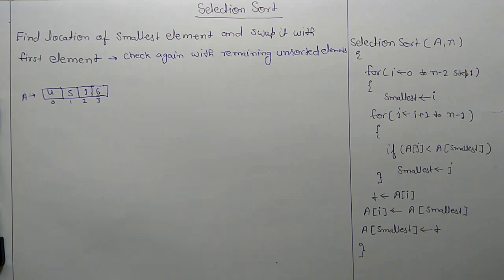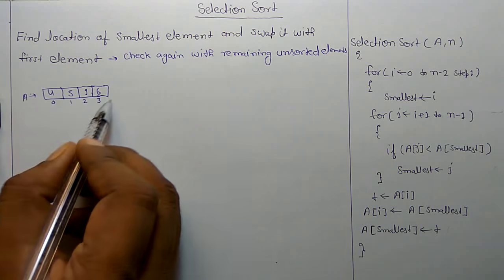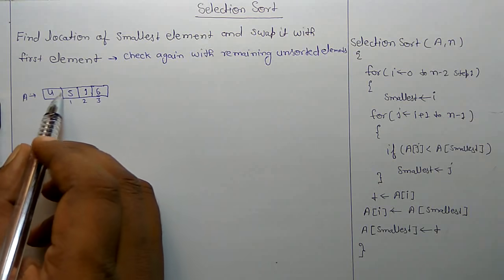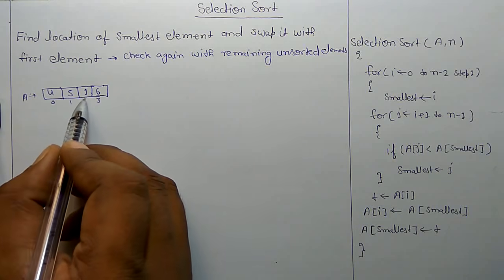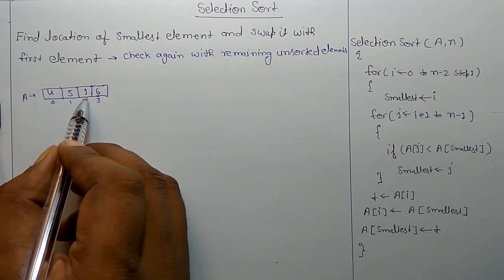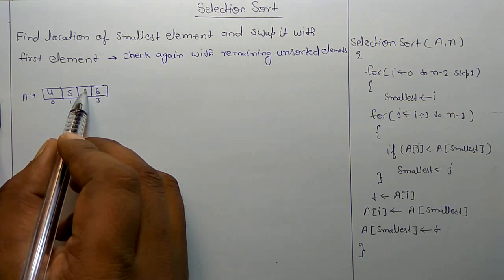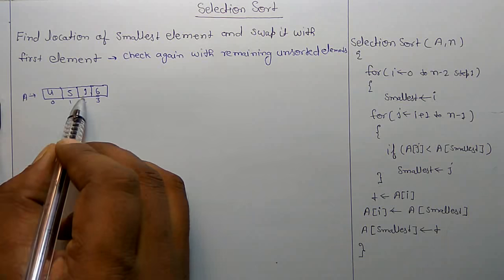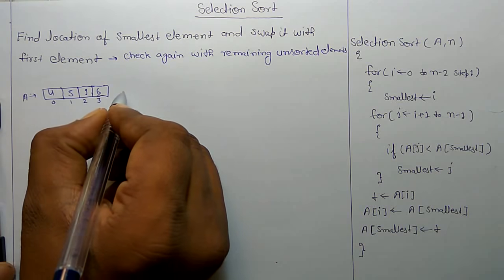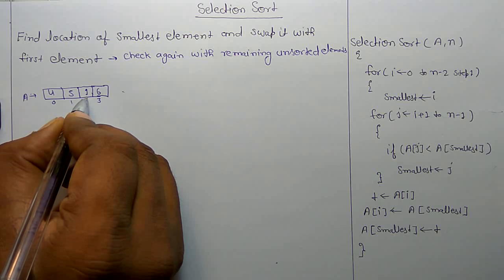We are going to learn selection sort. In selection sort, if unsorted elements are given, you have to find the smallest element in this unsorted set and swap it with the first place. For example, the smallest element in this array is 1, and we swap it with the first place.